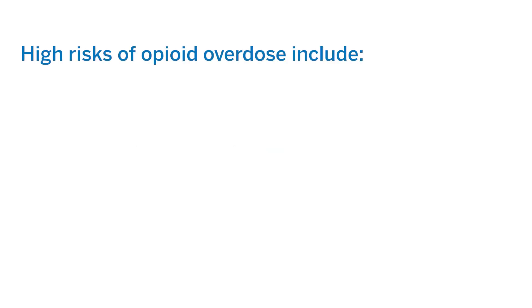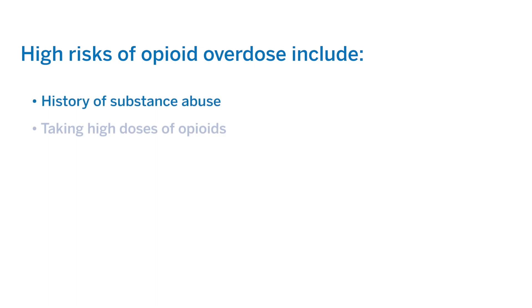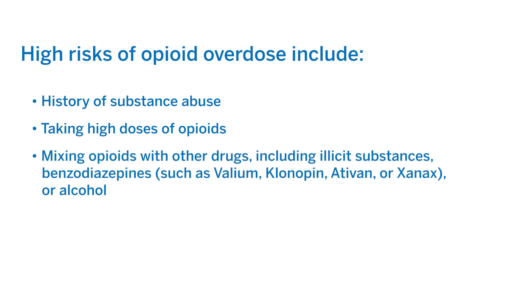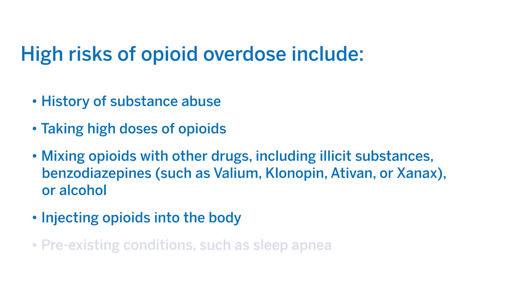People at high risk of opioid overdose include those with a history of substance abuse, those taking high doses of opioids, mixing opioids with other drugs including illicit substances or benzodiazepines such as Valium, Klonopin, Ativan, or Xanax, as well as alcohol, those who inject opioids into their body, and those with pre-existing conditions such as sleep apnea.